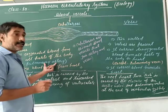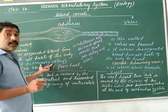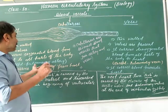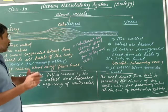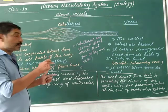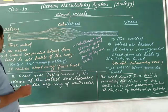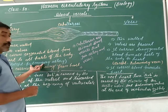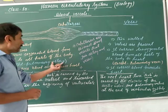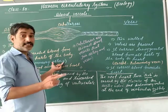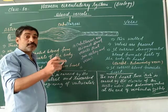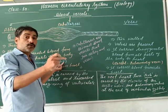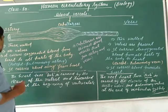Pulmonary artery is the artery that carries blood from the heart to the lungs. This is the pulmonary artery — the artery which goes to the lungs. These arteries carry oxygenated blood from the heart to the lungs.